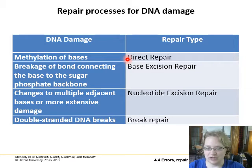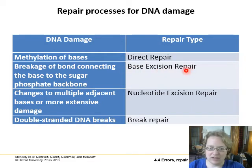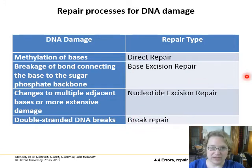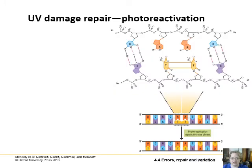There are four main types of repair processes for DNA damage: direct repair for methylated bases; base excision repair, which pops out just one base at a time; nucleotide excision repair, which removes a whole chunk from one side of the DNA strand; and double-strand break repair.